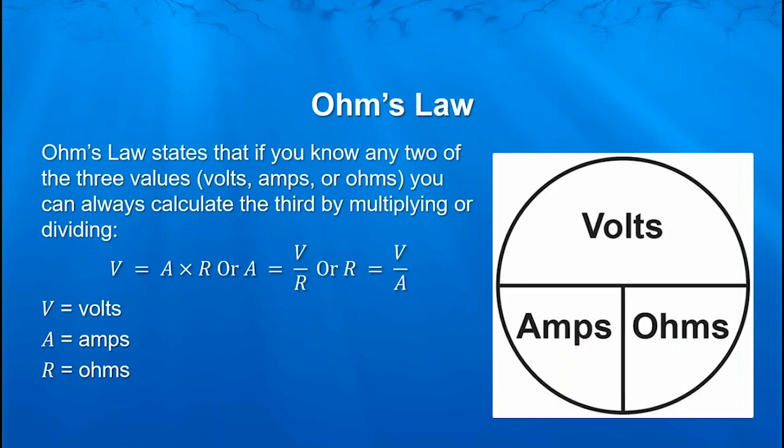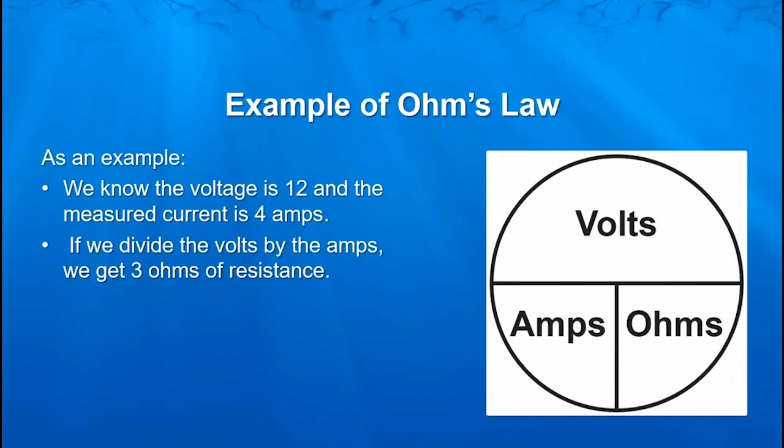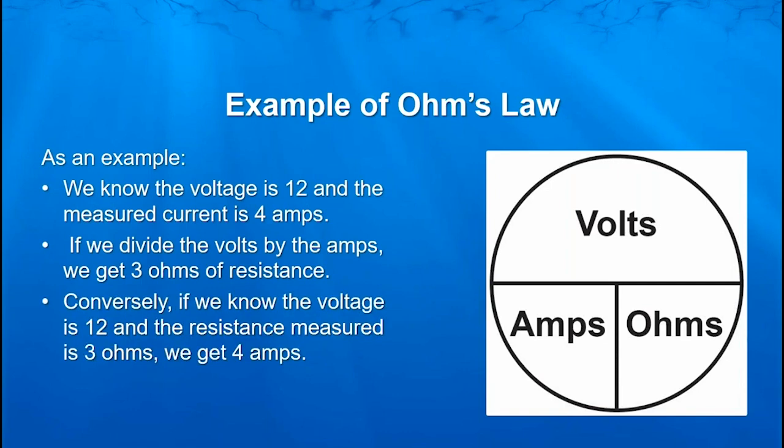Ohm's Law doesn't come into play in your everyday mathematical troubleshooting or installation work. It more gives you an idea of what the relationship is between those three entities. As an example, we normally have 12 volts in a system. If we can measure the current — the amperage flow at four amps — divide the volts by the amps, then we get three ohms of resistance. Conversely, if we know that the voltage is 12 and the resistance is three, we get four amps. Very easy mathematical equations to see how those entities affect one another.